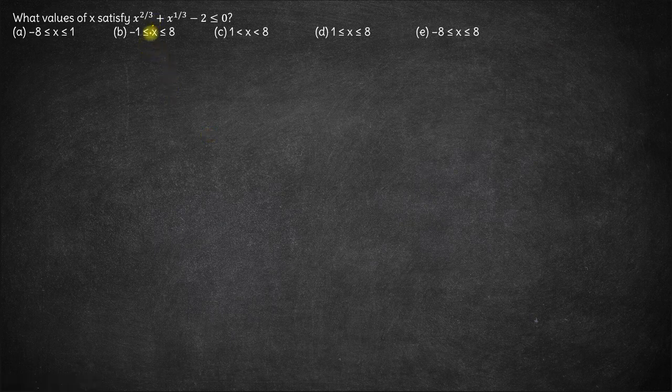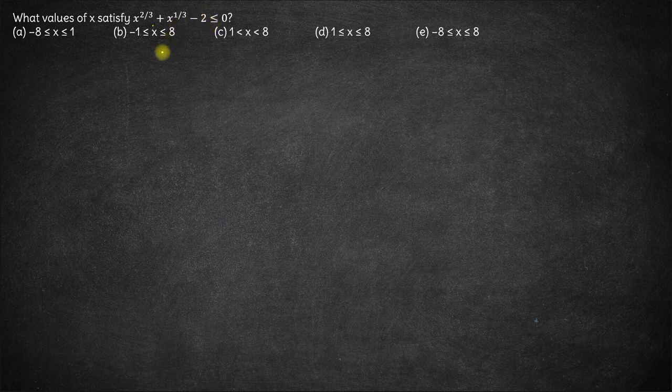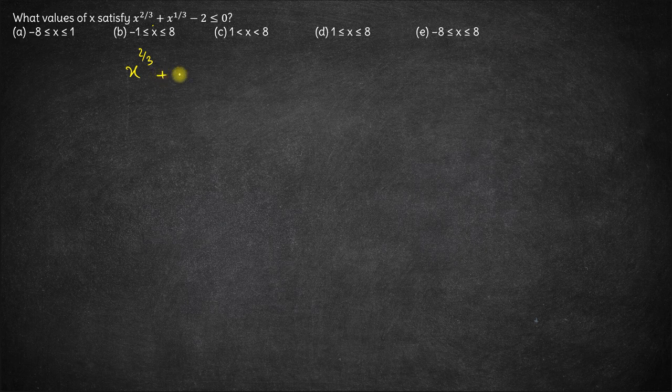Hi, here we have the values of x satisfying this inequality. We have the inequality x to the power 2/3 plus x to the power 1/3 minus 2 is less than or equal to 0.